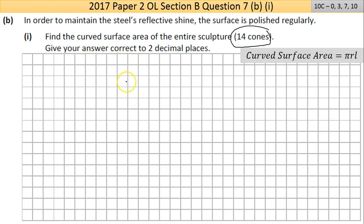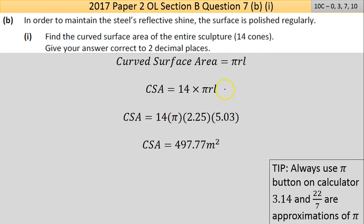The curved surface area of a cone equals π times r times the slant height, times 14 because it's 14 cones. So it's 14 times the formula. Put your numbers in and you get 497.77 square meters because it's an area.